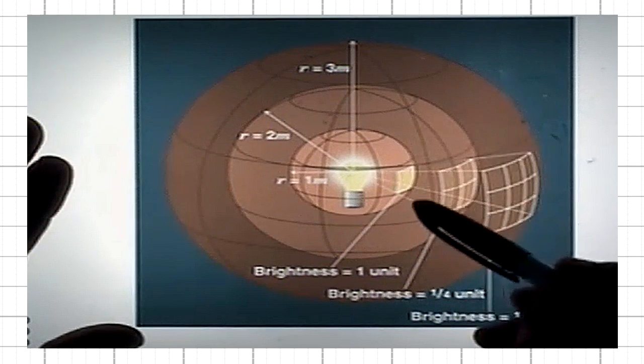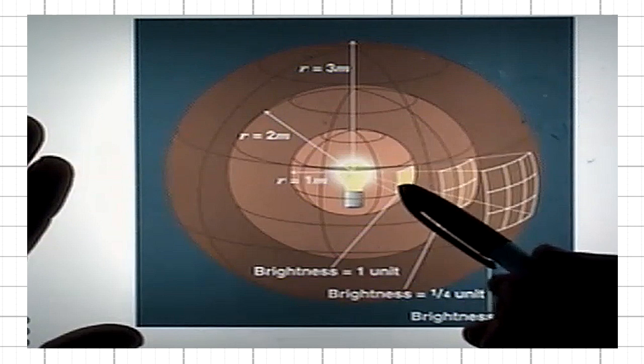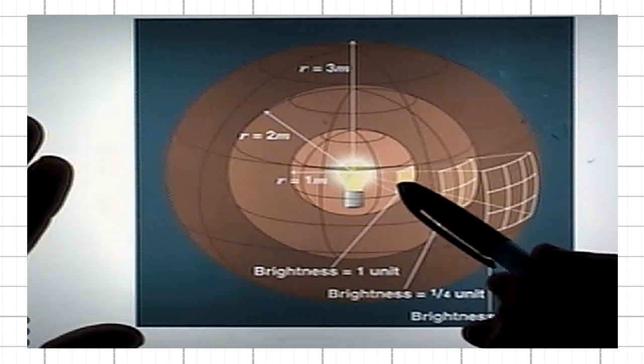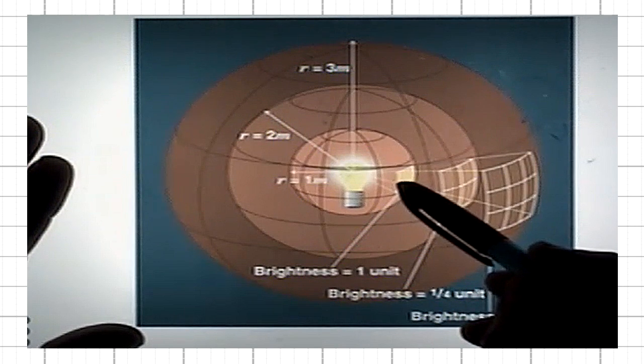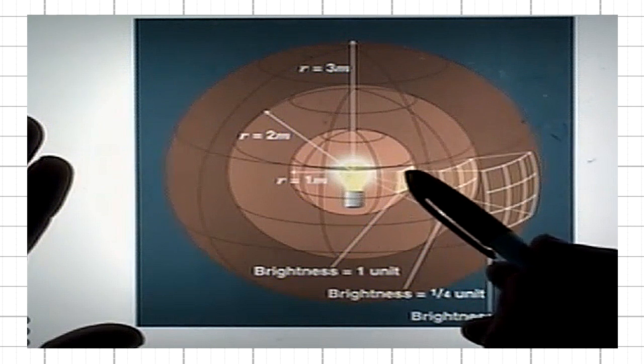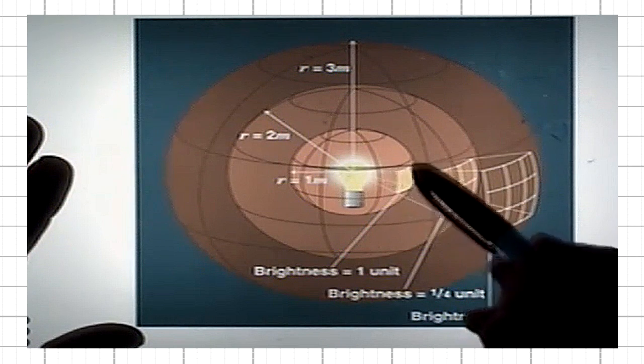In some units, the brightness would be one, because the brightness is amount of energy passing per unit time, per unit area.